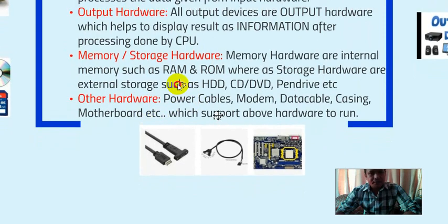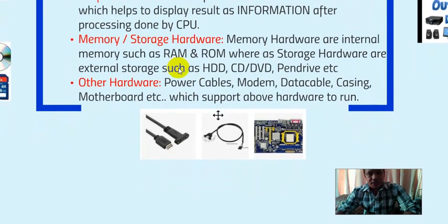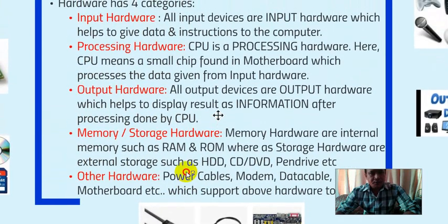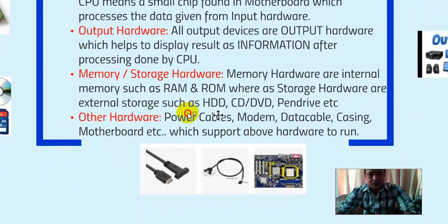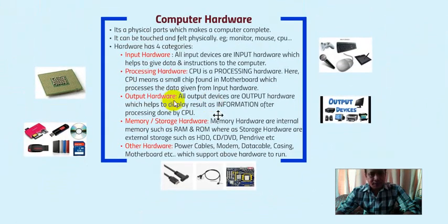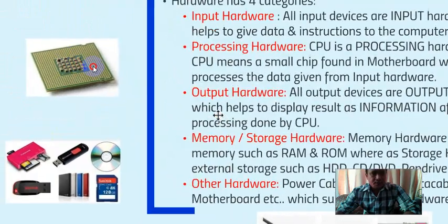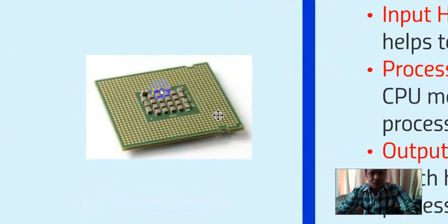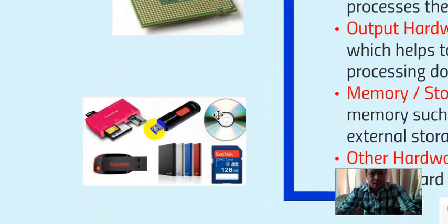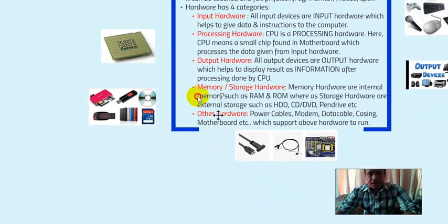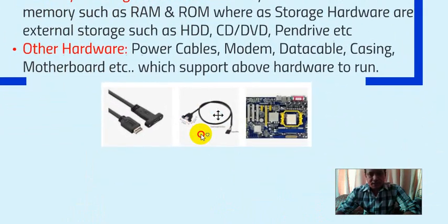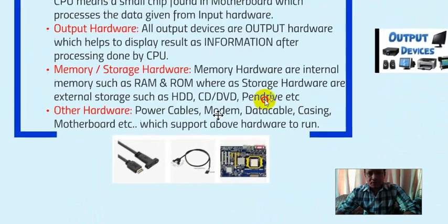The last category is other hardware. Some hardware is not based on input, processing, or output — they are exceptional and are called other hardware. Examples include power cables, modems, data cables, casing, and motherboard. These support all the above hardware — input, processing, output, and memory hardware — to run. In the pictures provided, you can see a CPU chip, memory or storage hardware, and other supporting hardware.